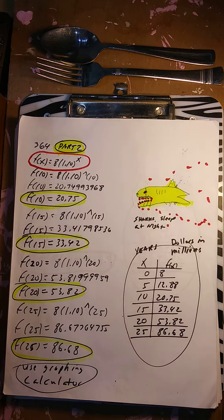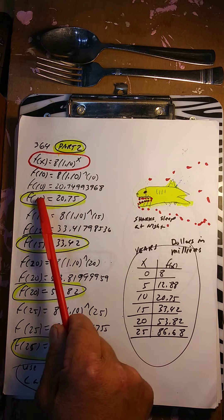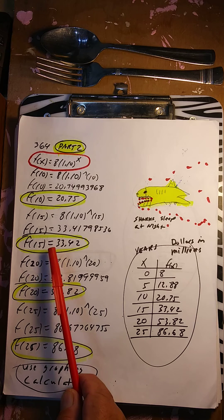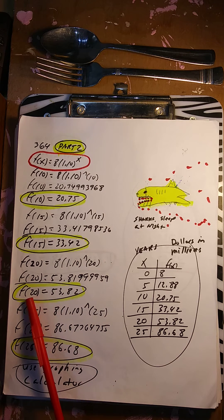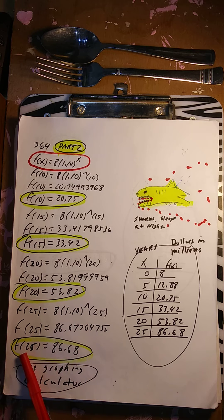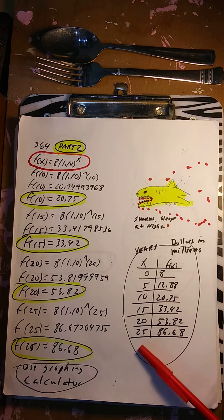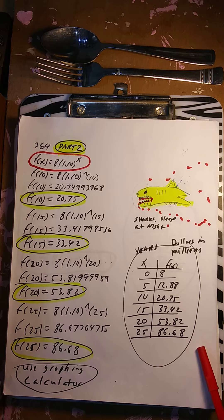Part 2. f(10) — same thing, put in your calculator. You're going to get this number, round it off to 20.75. f(15), round it off to 33.42. f(20), you're going to get 53.82. And f(25), round it off to 86.68. Now I have the numbers here — x, the years, and the dollars, in millions, that Aiden's house is worth.